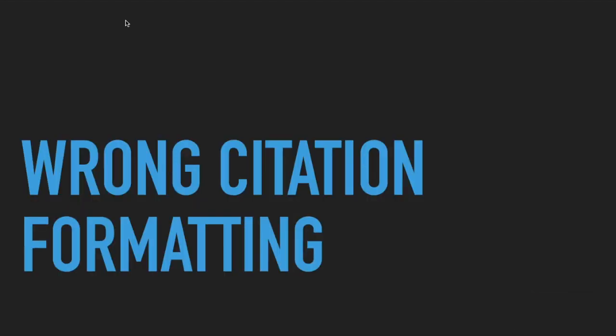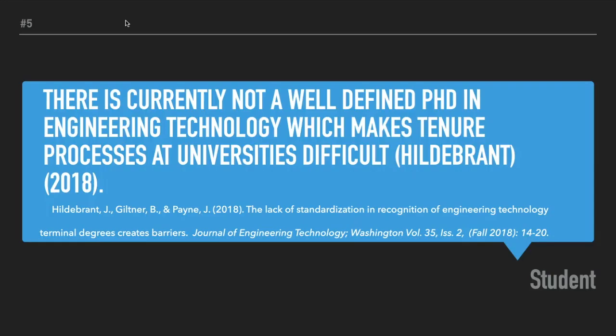Here's another one: wrong citation format. I see this all the time. If you're new to APA, formatting can be difficult. The author's last name should be in parentheses with a comma and the date — not in separate parentheses. That's just one example of many I've seen; sometimes students try to embed parentheses. Be sure that you use the right formatting.